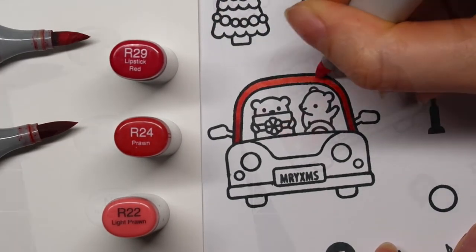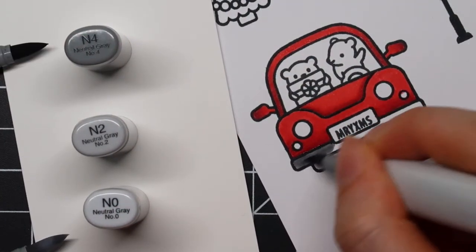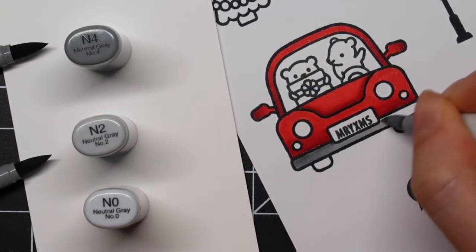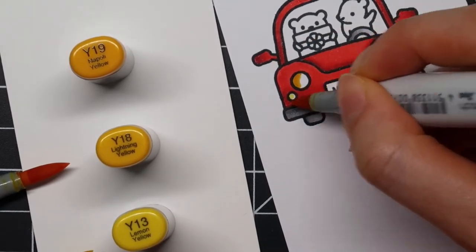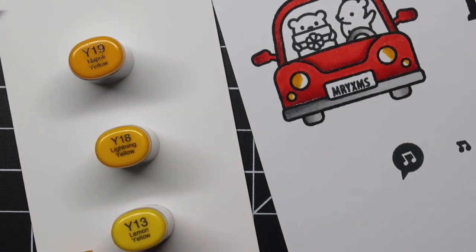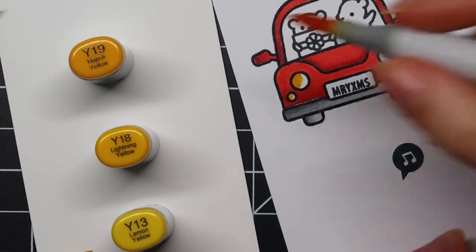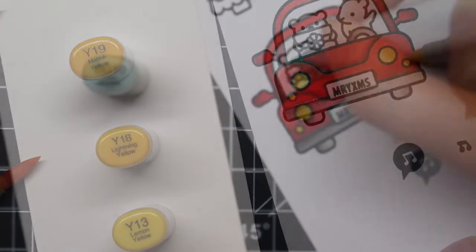I stamped all of these on Transo type coloring paper using Memento Tuxedo Black ink and now I'm using Copic Sketch markers to color all of these images. As always, I start with my lightest color, then I use the darkest shade, then the mid-tone color, and finally I blend all of that together using the lightest shade again.